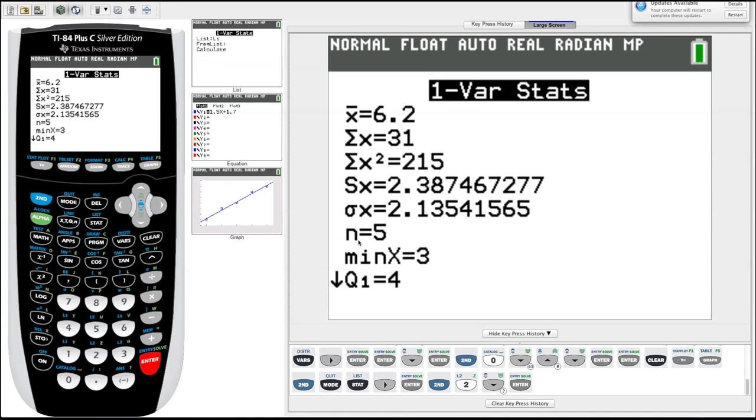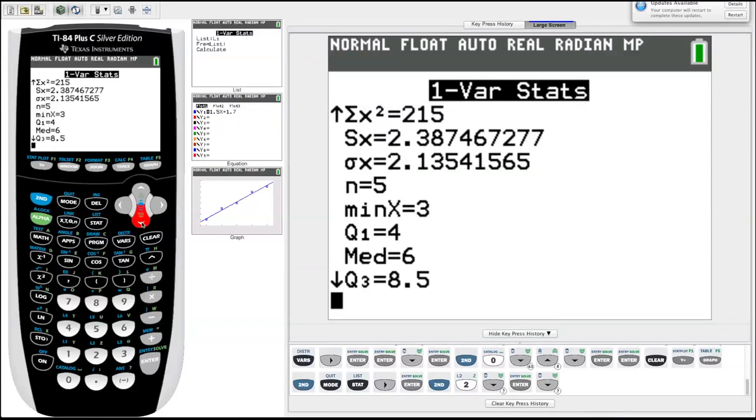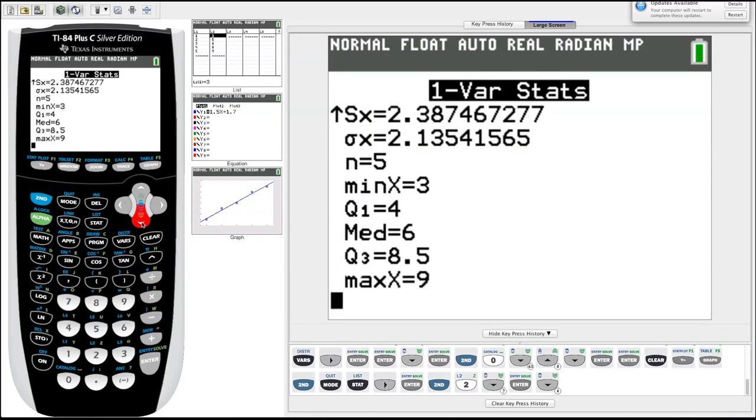N equals 5 tells us how many data points are in that list, which we entered 5, so that's good. We've got some more here. We've got min X, tells us our minimum X value, which was 3 in our list two, if we recall. Q1 is quartiles, your first quartile. If we arrow down, as it's prompting us, it has a little arrow there, there's some more information. MED, median, our median value is 6. Our quartile 3 value is 8.5, and our maximum value in that list was 9.